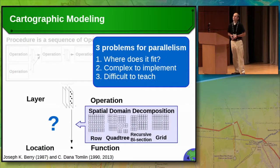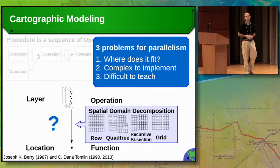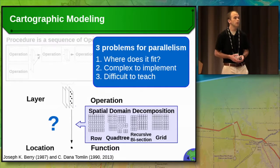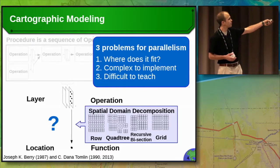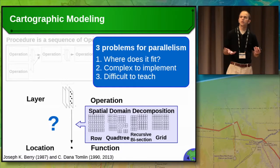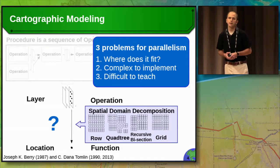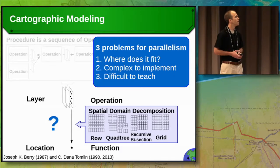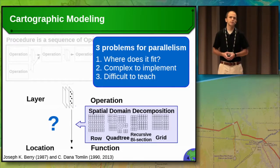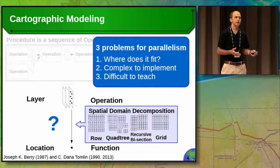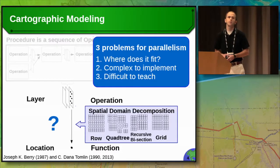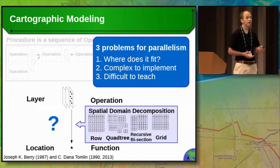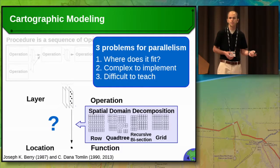If you're trying to incorporate cartographic modeling into a CyberGIS — really trying to leverage parallel and high-performance computing — you run into three fundamental problems. First, where does it fit within the conceptual framework? There's no space because we go directly from layer to location without room for spatial domain decomposition, which is the standard way to decompose a 2D raster for a parallel architecture. Even if we had that space, it's complex to implement — above the threshold of typical GI scientists. And that makes teaching these concepts very difficult, as I found in my CyberGIS class last spring.